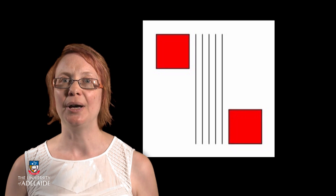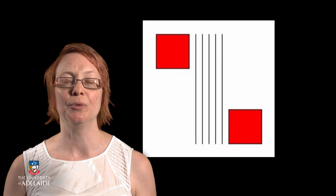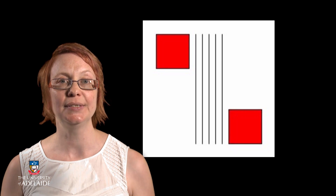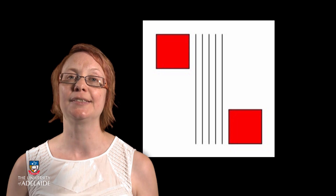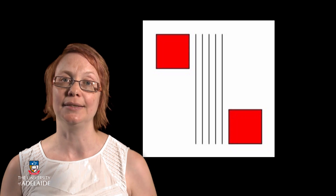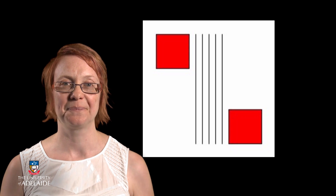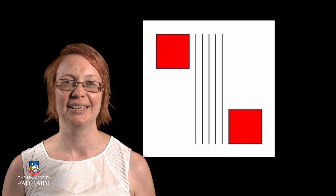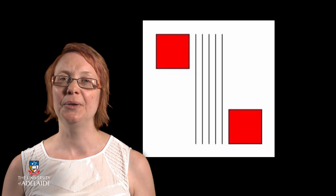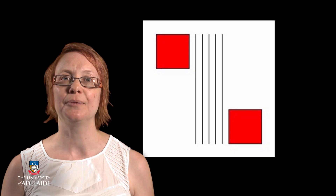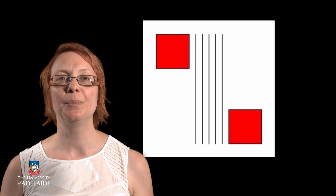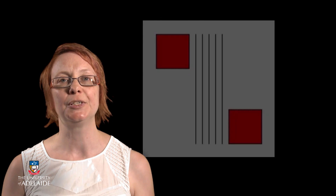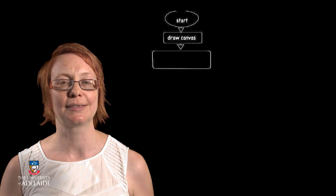Can you identify the part of the image where we are repeating instructions? That's right, it is a sequence of lines in the image. We could create a flowchart for the design of this image by decomposing the problem into its different parts.